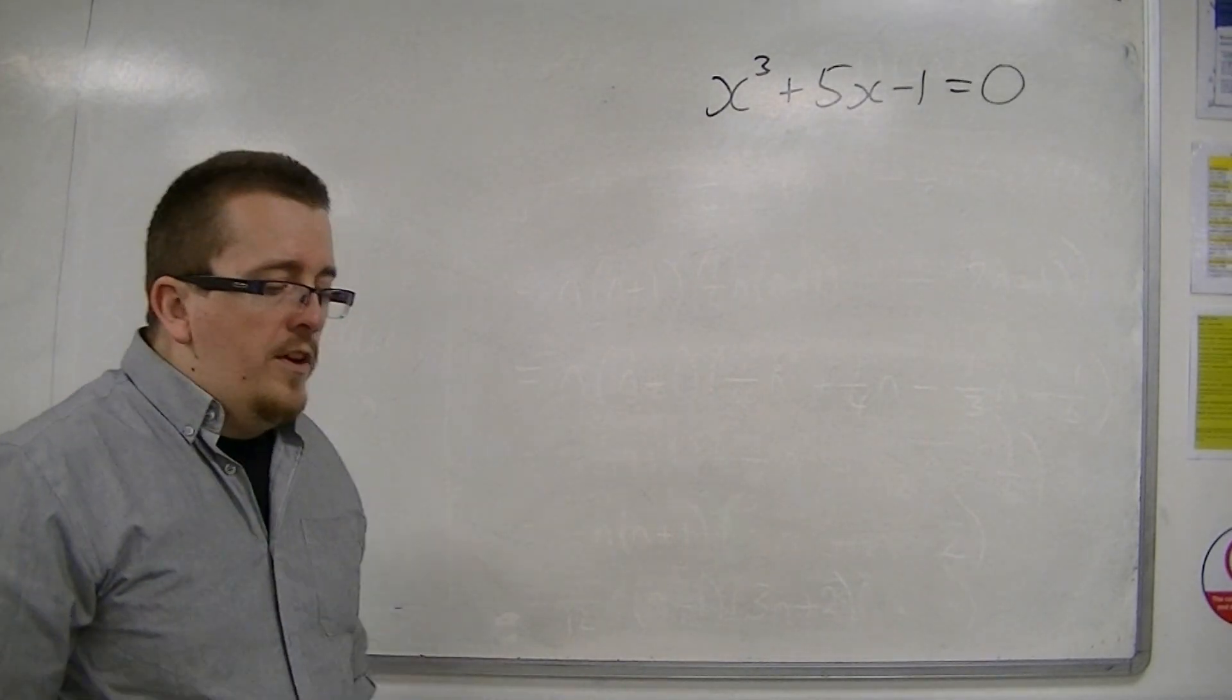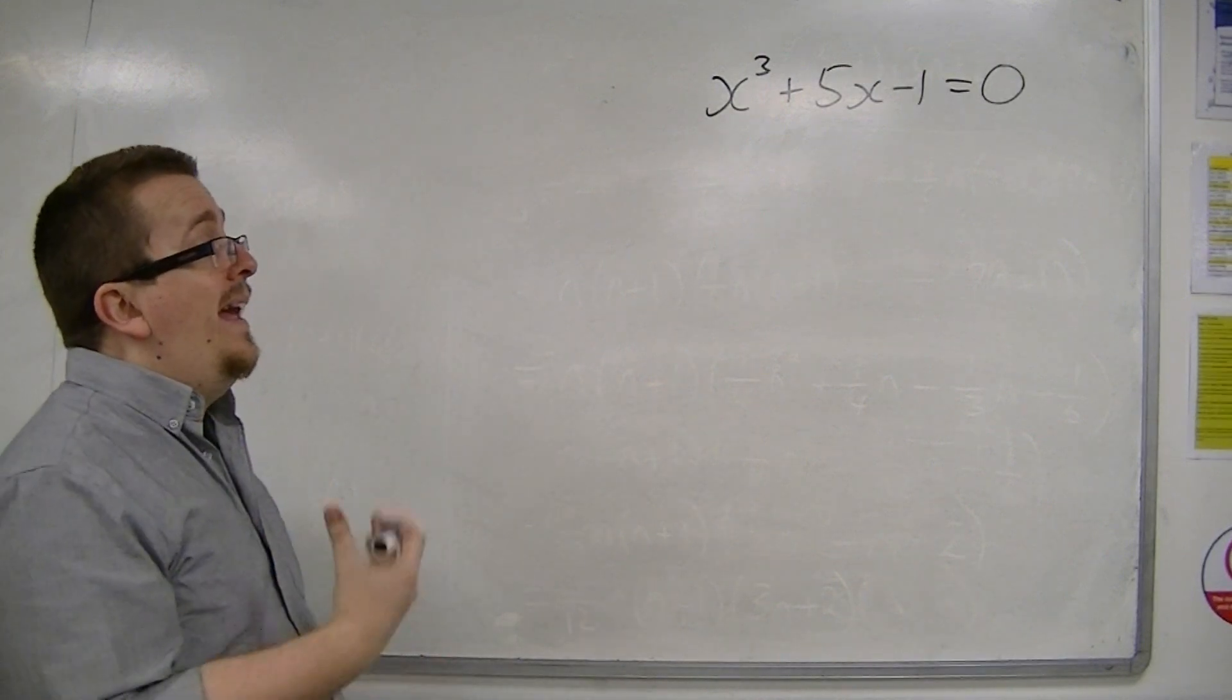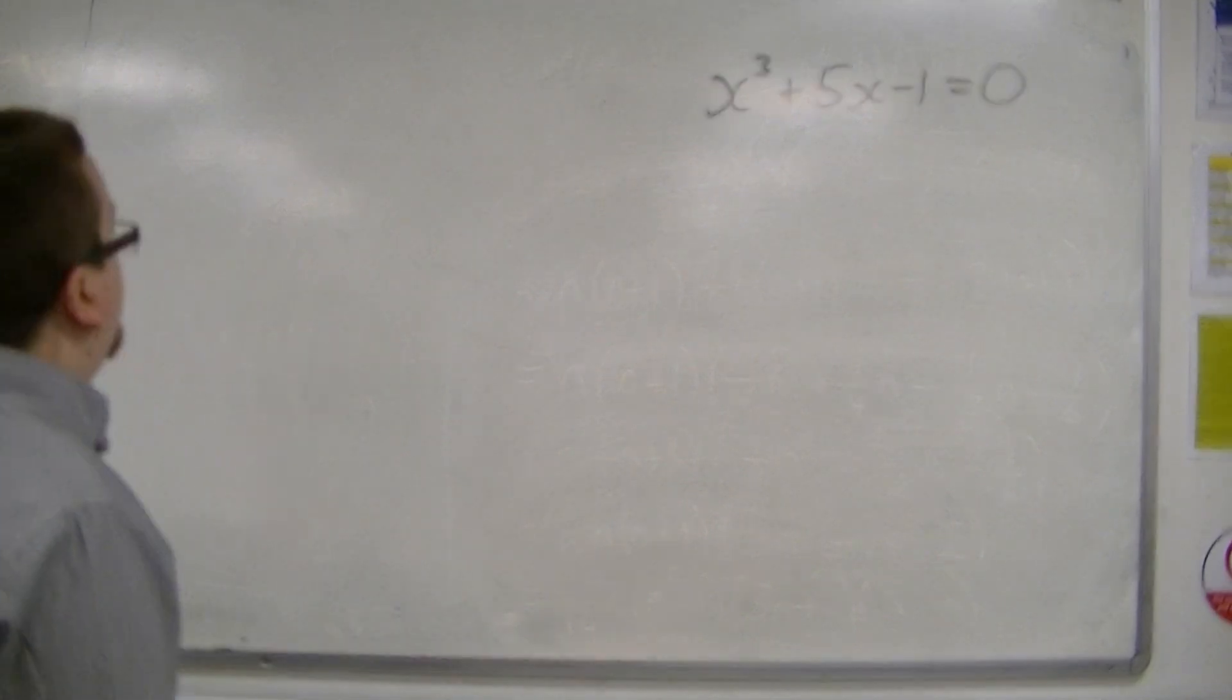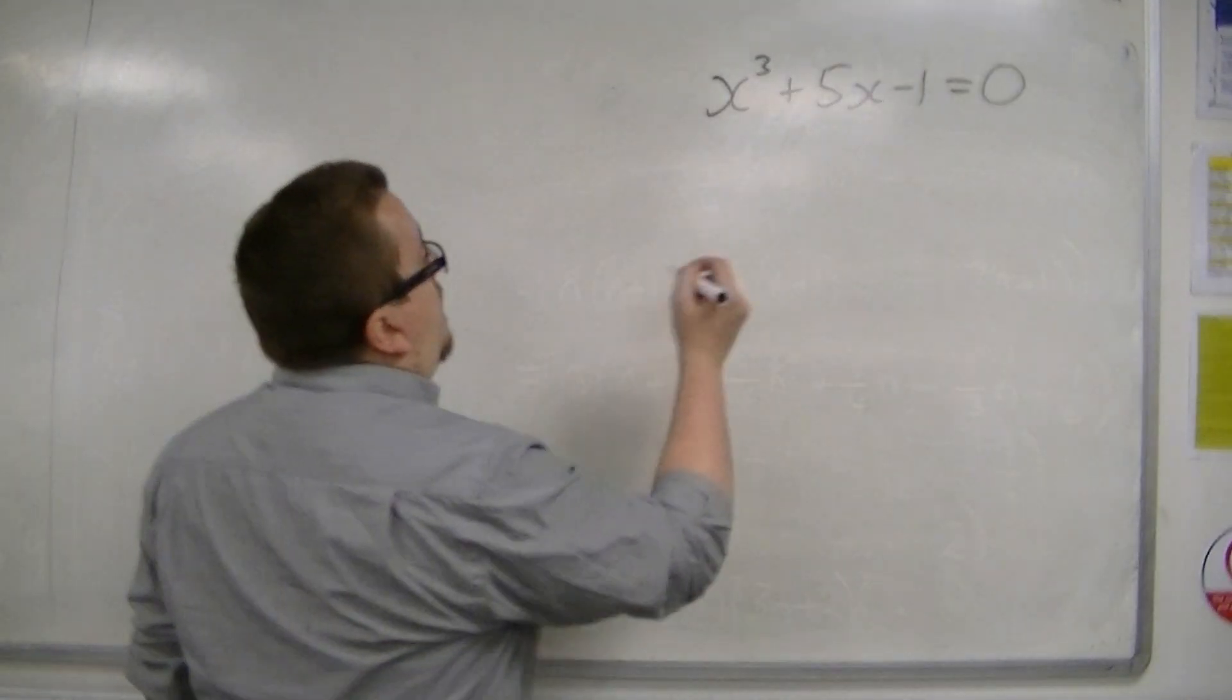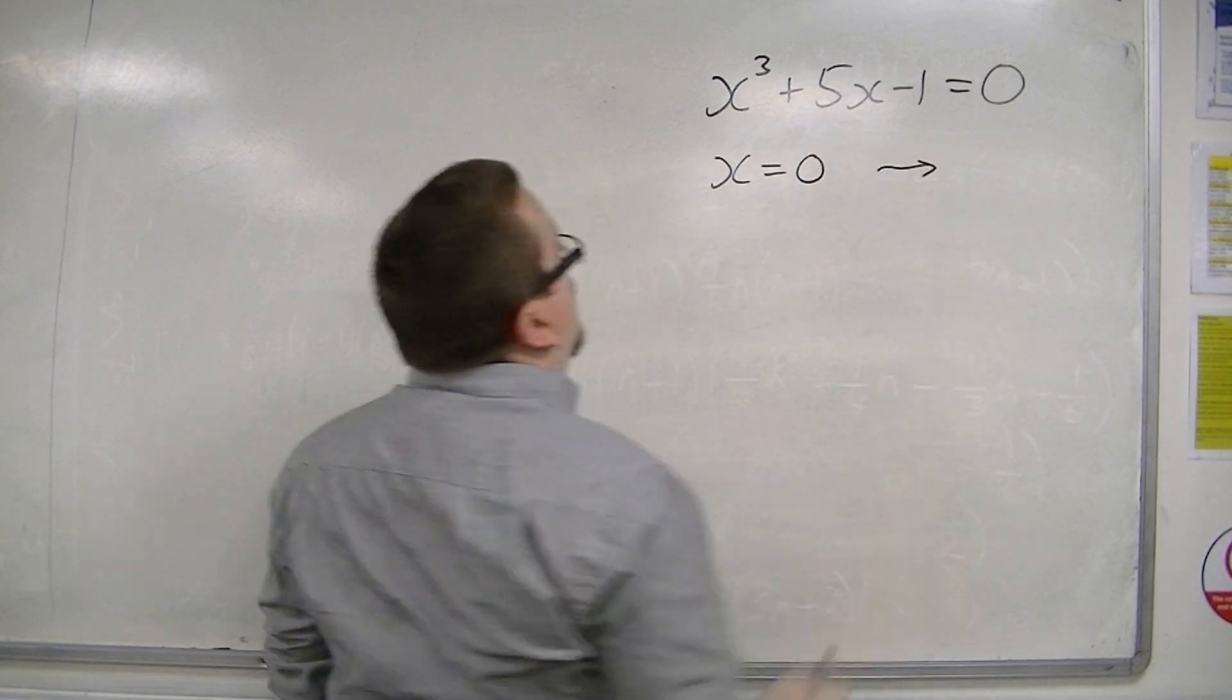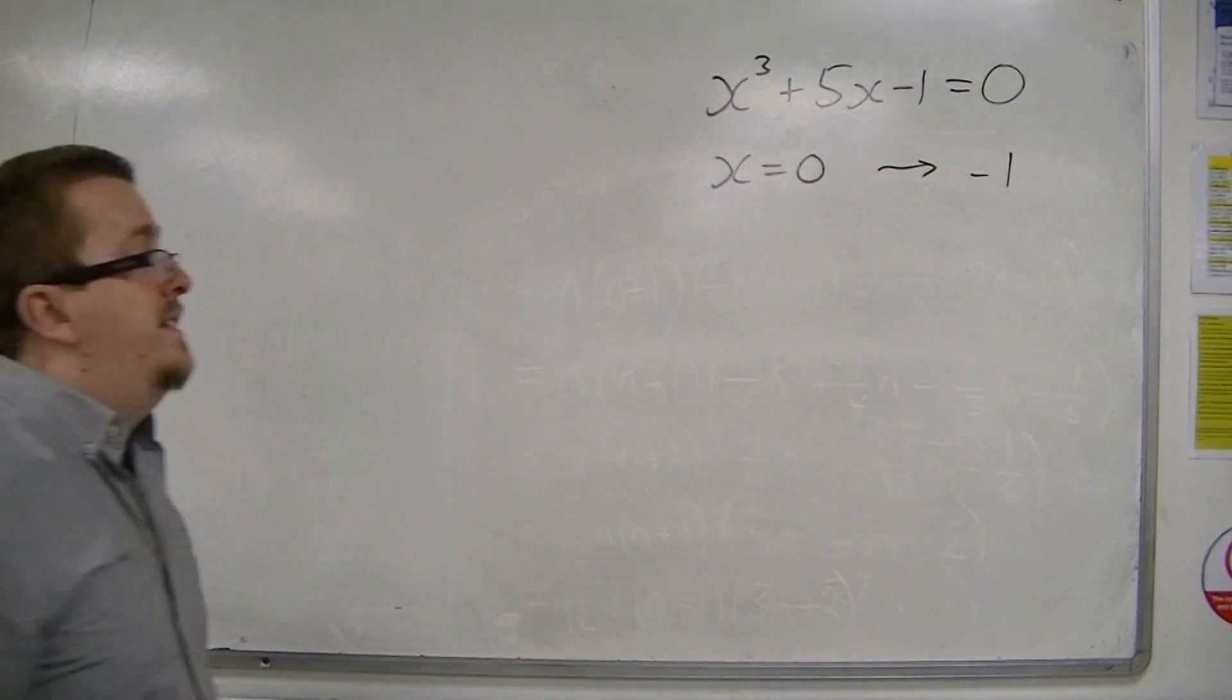Well, what I'd want to do is substitute values in to see how close to 0 I can get. So, for example, I might try when x is 0. When x is 0 I get minus 1, which is negative...